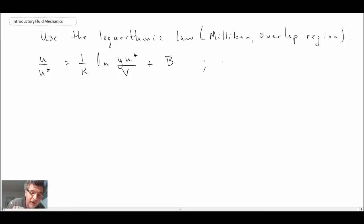However, the friction velocity u star was defined as being the wall shear stress divided by the density raised to the power of one half. And this is friction velocity.